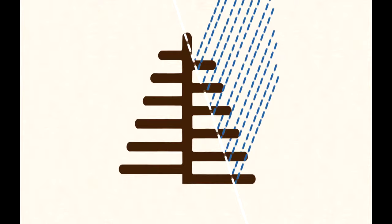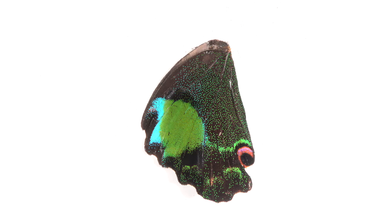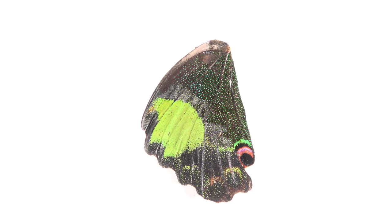It is easy to illustrate this illusion. For example, let's put alcohol on a butterfly's wings — it blocks the refraction of the light rays and the structural color disappears. However, when the alcohol evaporates, the blue color will return.